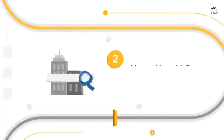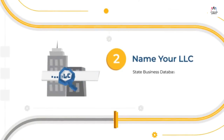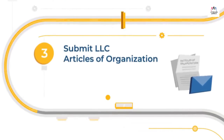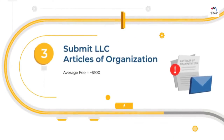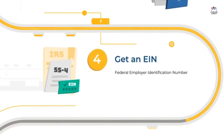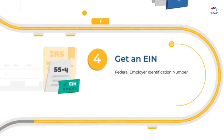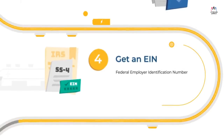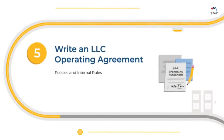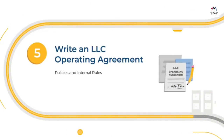Next, see if your name is available by checking your state's business database. Now you're ready to file state paperwork — the average fee is around $100. Apply for a free EIN from the IRS website; having your tax ID in hand will make the remaining steps easy. Put your LLC policy in writing with an operating agreement — make it easy with a free template.